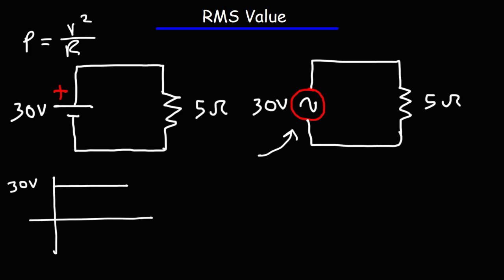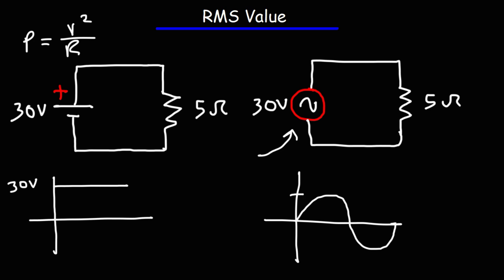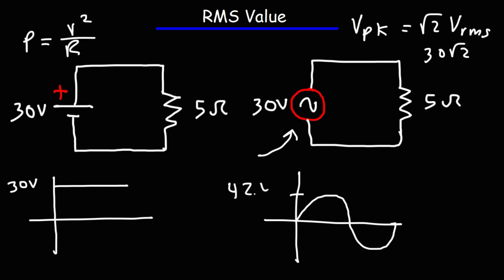You need to understand the difference between the peak voltage and the RMS voltage. The signal will look something like a sine wave with a peak voltage that is higher than 30 volts. To calculate the peak voltage, it's going to be the square root of 2 times the RMS voltage. In this example, the RMS voltage is 30, so it's going to be 30 times the square root of 2. The square root of 2 is about 1.4142, and if you multiply that by 30, you get a peak voltage of approximately 42.4 volts.